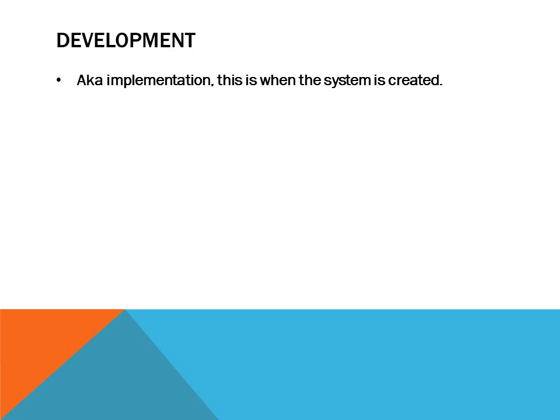Development — also known as the implementation stage — is when the system is actually created. Based on the designs or blueprints made in the previous stage, the development stage is where it becomes real, not just words on a piece of paper or a document on a computer.